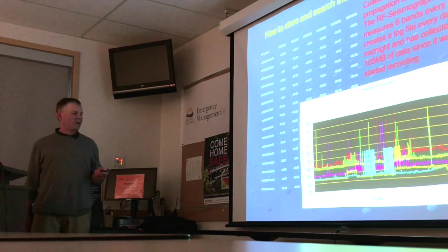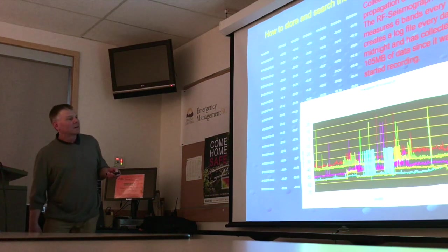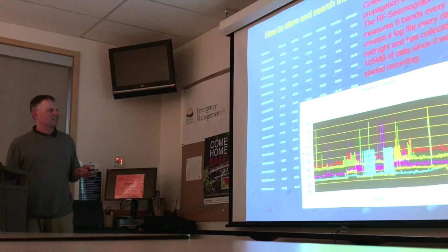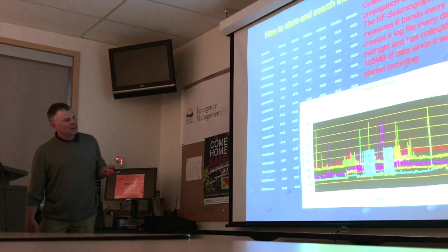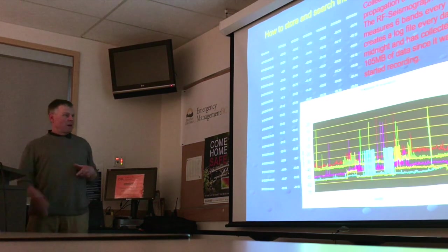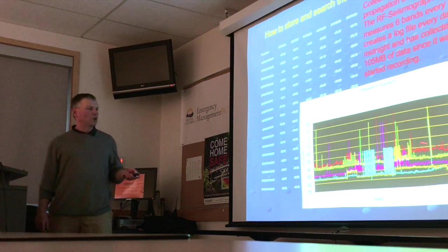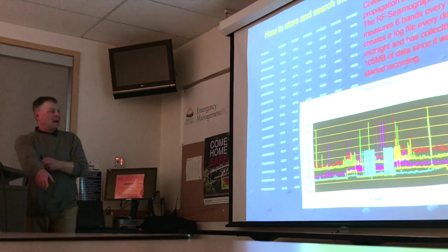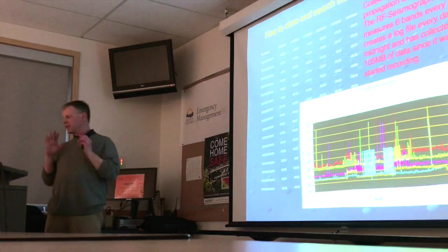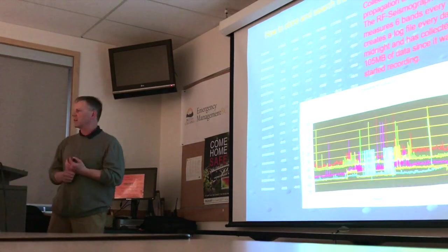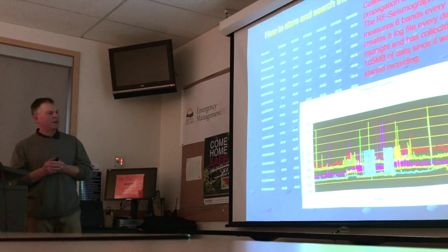The solar flux was higher when this was recorded, so there was activity on 15 meters. You can see this is man-made propagation because the signals are so flat. When you see flat lines like this, you know it's created by the ionosphere or surrounding space — nothing changes fast. That's how we differentiate between a man-made signal and one created by nature.